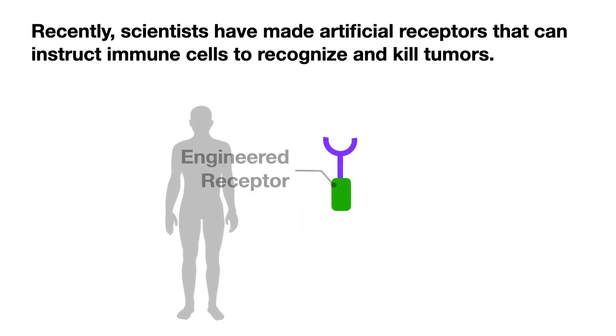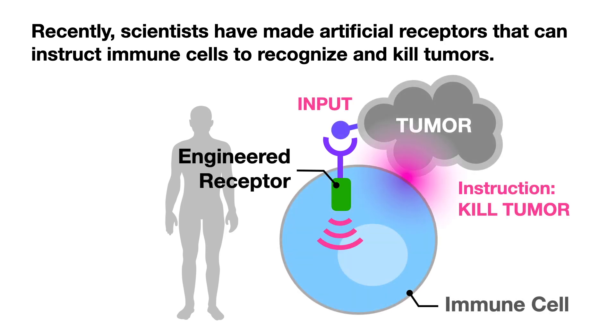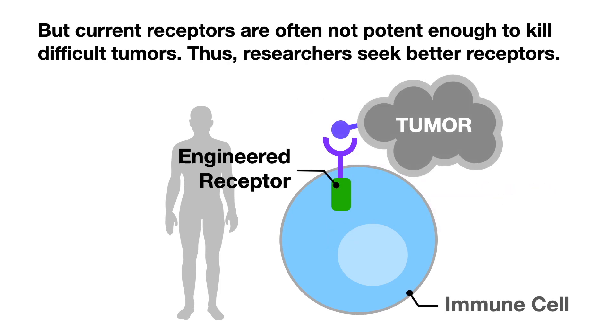Recently scientists have made artificial receptors that can instruct immune cells to recognize and kill tumors. But current receptors are often not potent enough to kill difficult tumors. Thus researchers seek better receptors.